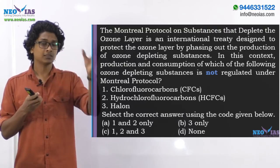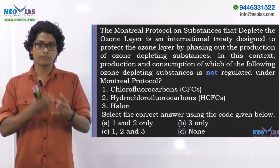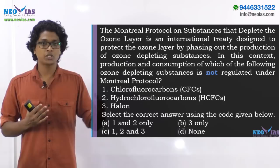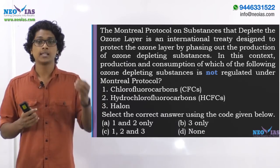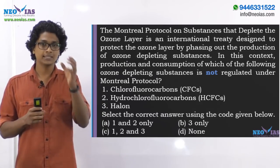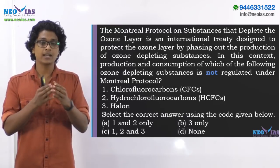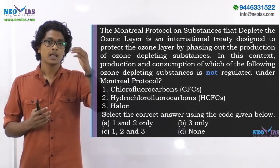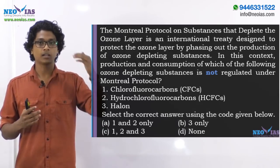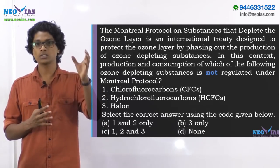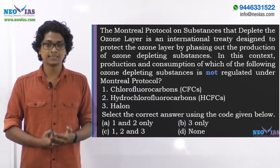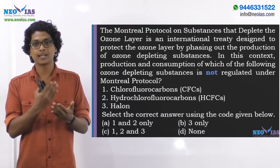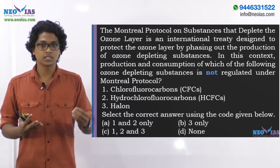Various ozone depleting substances like chlorofluorocarbons and various such gases arise due to anthropogenic reasons. All of these are synthetic gases that can disintegrate the ozone molecules in the ozone layer, which can result in UV radiations entering the earth's atmosphere, causing cancer and other diseases. It can also result in climate change or biodiversity loss.